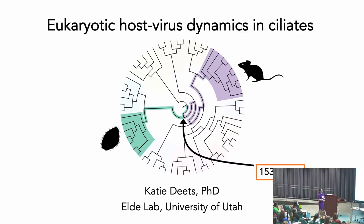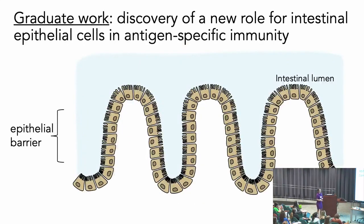I want to take a quick dive into my thesis work, and to do that we have to visit the small intestine of the mouse. My PhD work was in intestinal immunity in mice, and this is a pretty complex organ — there's a lot going on here that can make it really interesting and also really challenging to study. It's incredible that this barrier surface is maintained by a single layer of epithelial cells that really separate our body cavity from the outside world found here in the lumen. Most of my thesis work, I was really interested in these intestinal epithelial cells and their role in immunity.